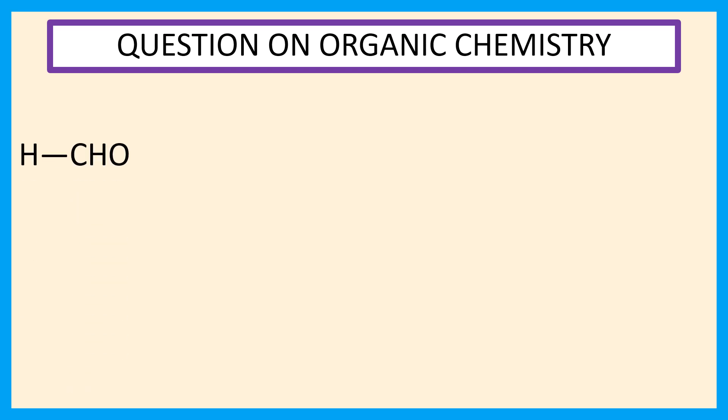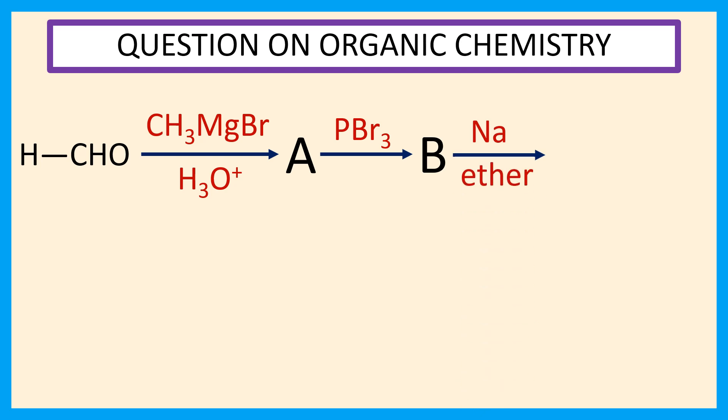Reaction of formaldehyde with CH3MgBr in presence of H3O plus produce compound A. Reaction of compound A with PBr3 produce compound B. Reaction of compound B with sodium in presence of ether produce compound C. So, what is compound C?